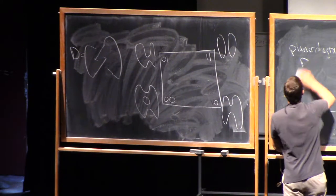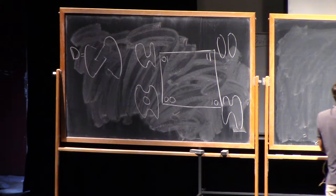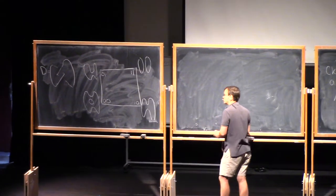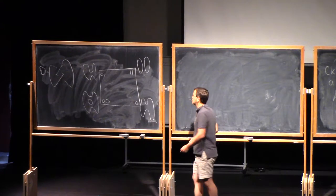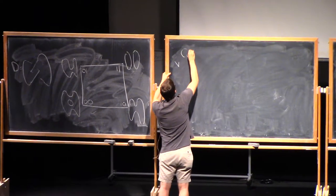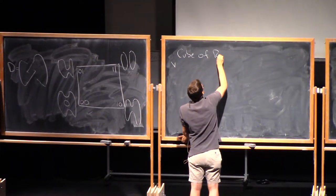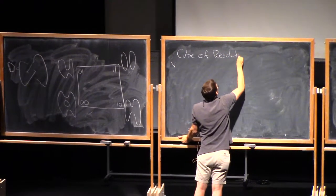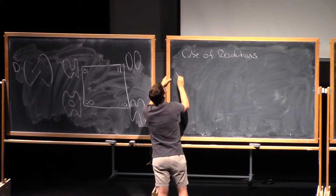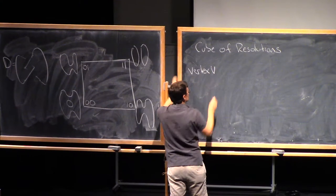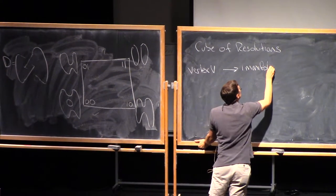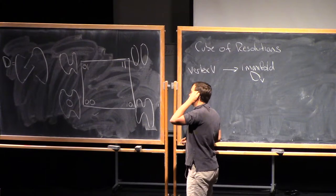So you'll notice that after I've resolved all the crossings, I have a diagram with no crossings at all, which is just a bunch of circles sitting in the plane. And I'll forget, actually, how those circles are embedded and just think about them as a one-manifold. So if I have a vertex V of the cube, then to that I see a one-manifold that I'll call d_V.